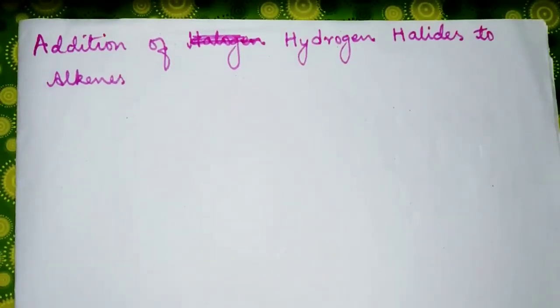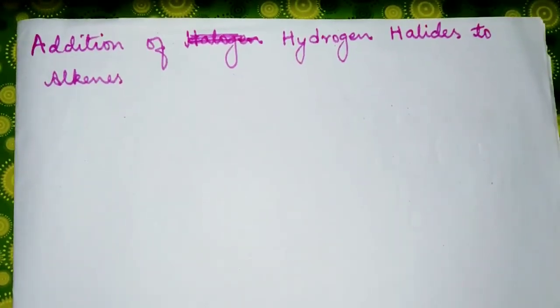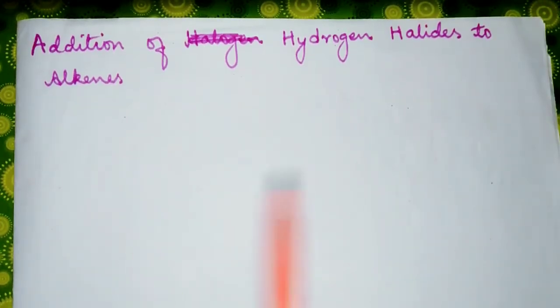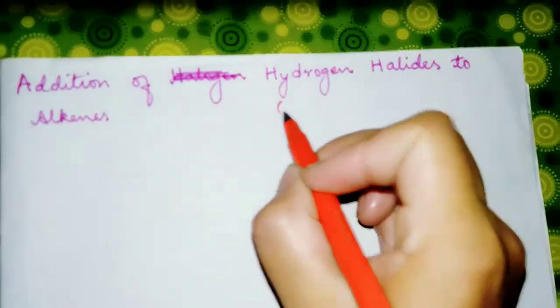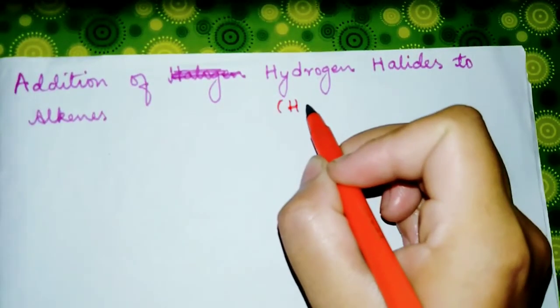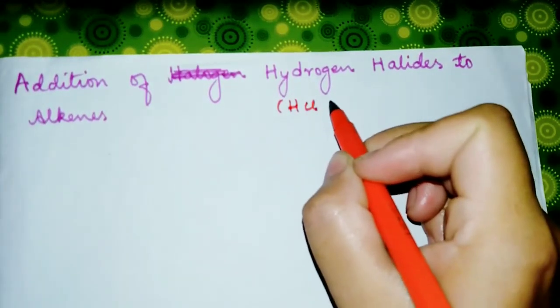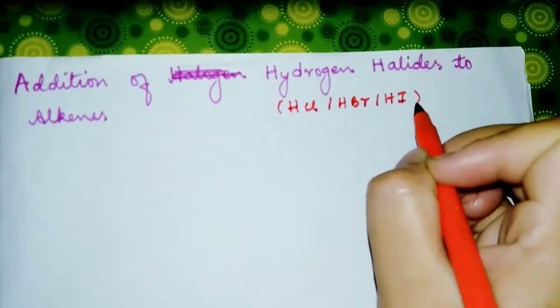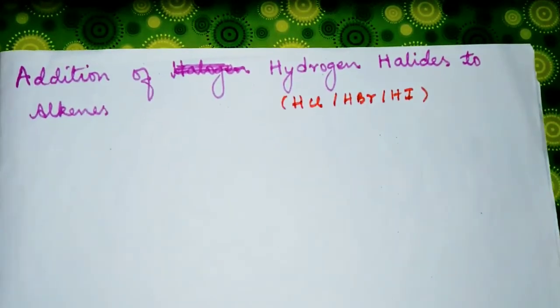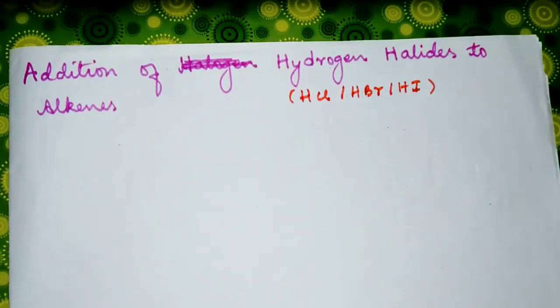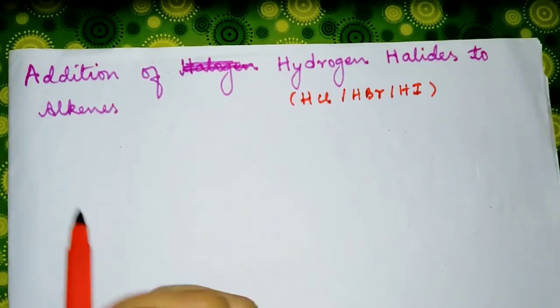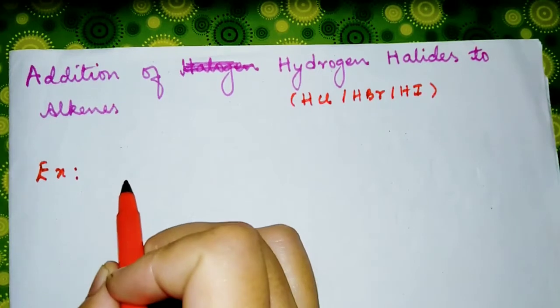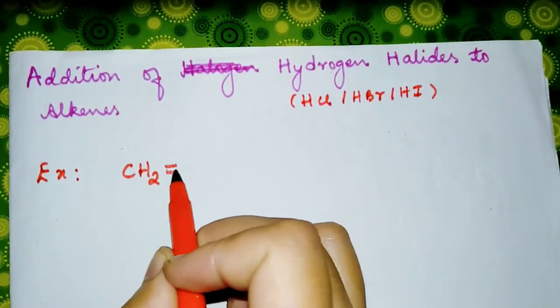In this video we are going to learn about the addition of hydrogen halides to alkenes. Hydrogen halides can be hydrochloric acid, hydrobromic acid, or hydroiodic acid. Let's take an example of an alkene, say ethylene CH2 double bond CH2.